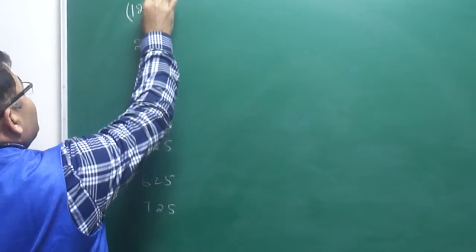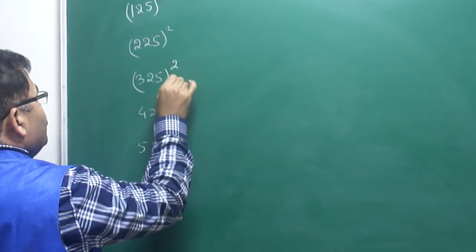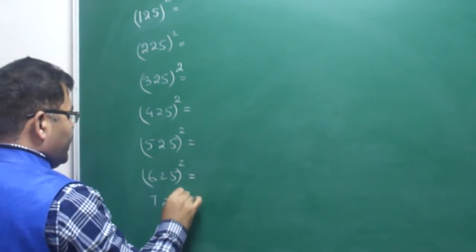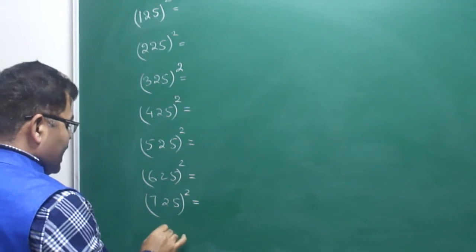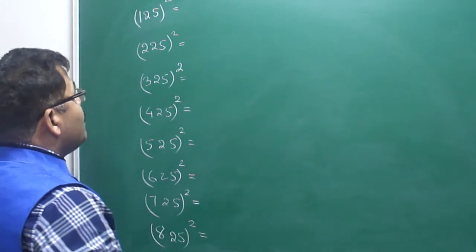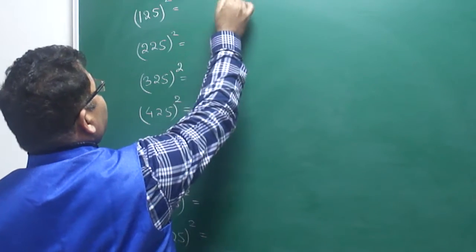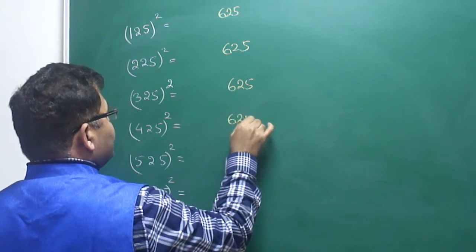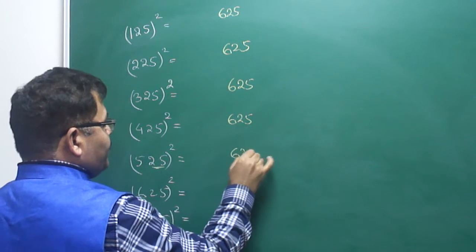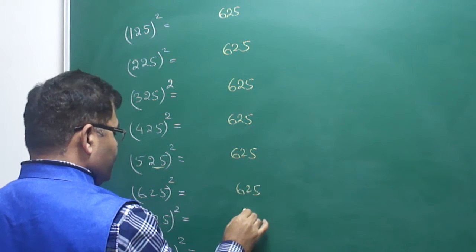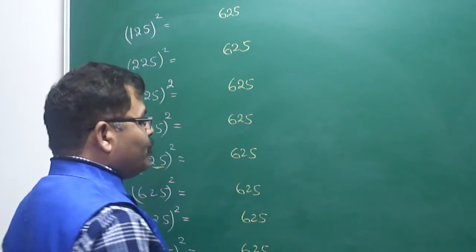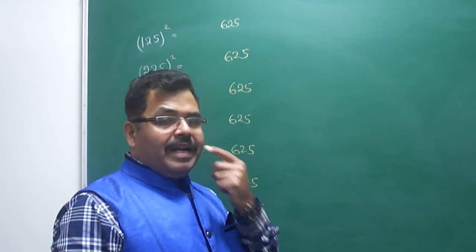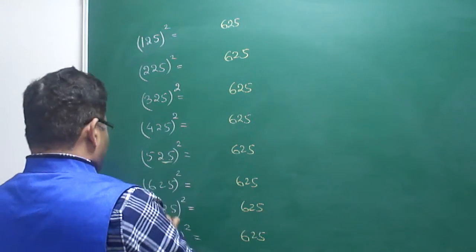If someone has to find the square of these numbers, what we have previously discussed is also applicable here. But instead of doing that, here is the key rule: if the last two digits of any number are 25, then the last three digits of its square will always be 625.